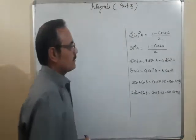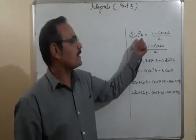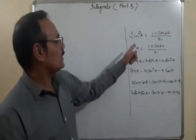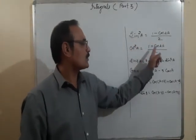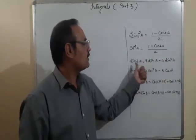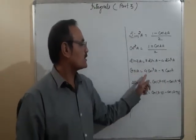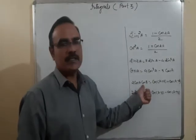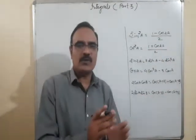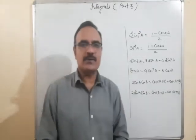And 2sinA·sinB = cos(A−B) − cos(A+B). These are the properties used when you solve integration questions and there is a power — like sin²A, which is difficult to integrate directly — so we convert it into these forms. Sin²A is converted to that form, cos²A to this form.